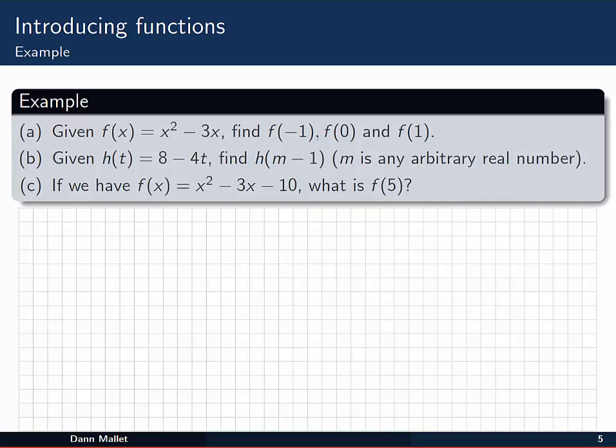Alright, so a little bit more on evaluating functions. Here's a few examples, and I'm going to go through this first one straight away. Part a: given f of x equals x squared minus 3x, I want to know what f of minus 1, f of 0, and f of 1 would be.